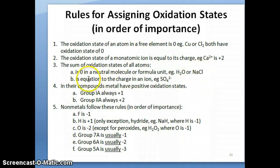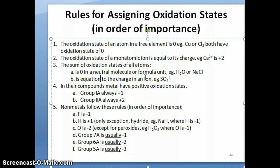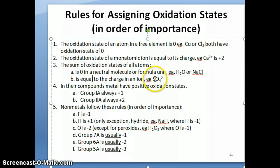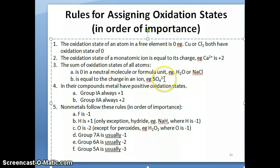However, if you have a polyatomic ion — because the species itself has a charge — then the sum of the oxidation numbers of all atoms must equal the charge of the ion. So for example, in sulfate, the sum of the oxidation number of sulfur plus the four oxygens must equal negative two.